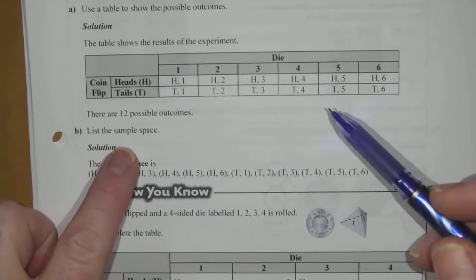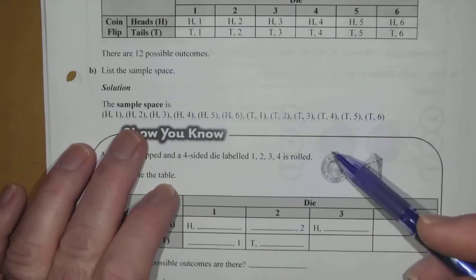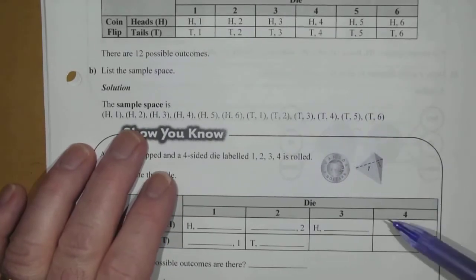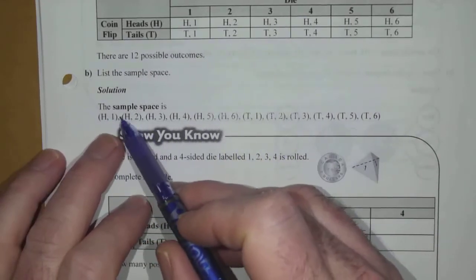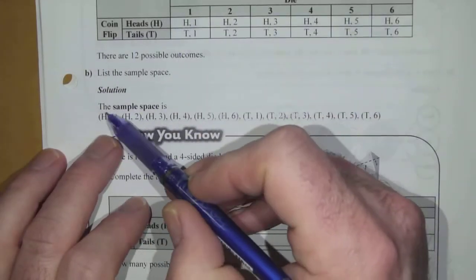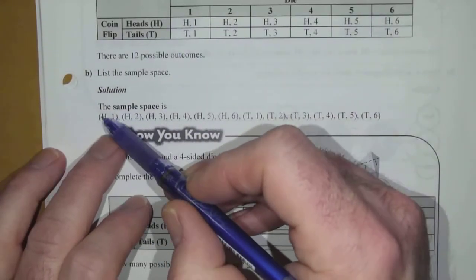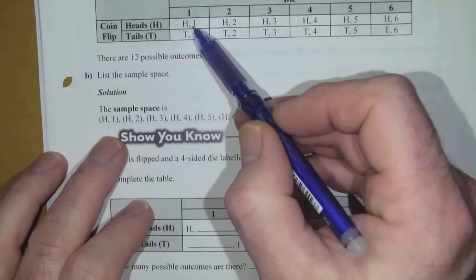Now, you can list this sample space as well. And how you do that with probability is just like this. Within brackets, you can indicate each scenario. So, you'll notice h, comma, one is in brackets. That's one of the cells of this table.